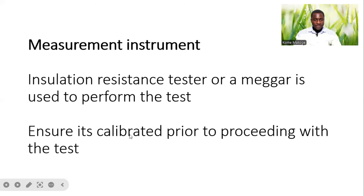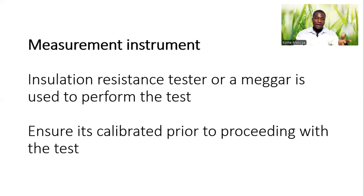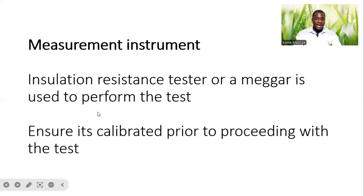The measurement instrument used is an Insulation Resistance Tester or Mega Tester. Like we all know, before we carry out any test, we have to make sure that our measurement instruments are all calibrated and up to date. Also make sure that you provide the calibration certificate attached to the inspection before submitting.